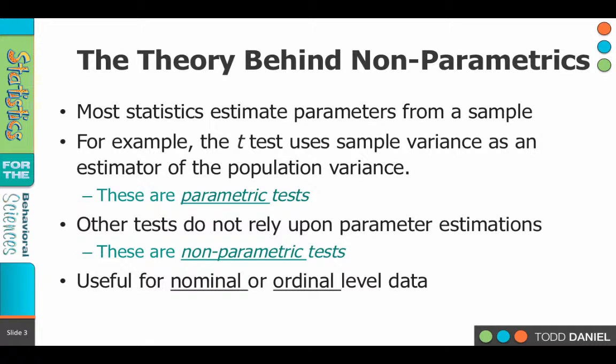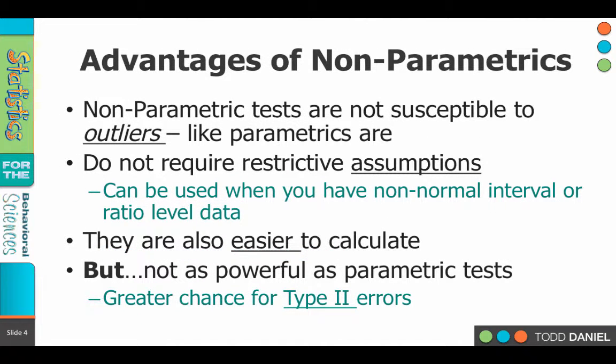Non-parametric tests are very useful when the data are at the nominal or ordinal level. They also have the advantage that we can use them when our parametric tests break down, or the assumptions of the test have been too badly violated. Non-parametric tests are not susceptible to outliers in the same way that parametric tests are, and if the assumptions have been violated, we can still use a non-parametric alternative. It also turns out that in many cases they're actually easier to calculate.